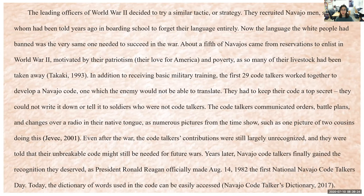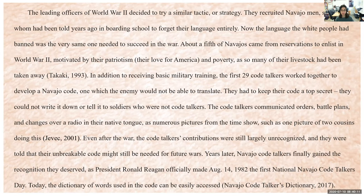About a fifth of Navajos came from reservations to enlist in World War II, motivated by their patriotism and poverty — so many of their livestock had been taken away. The first 29 code talkers worked together to develop a Navajo code the enemy would not be able to translate. They kept their code top secret — they could not write it down or tell it to soldiers who were not code talkers. The code talkers communicated orders, battle plans, and changes over a radio in their native tongue. Even after the war, their contributions were largely unrecognized, and they were told their unbreakable code might still be needed for future wars.